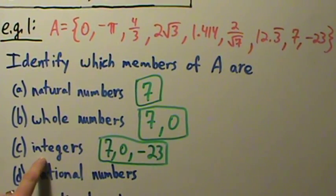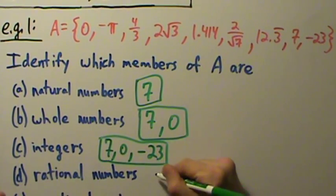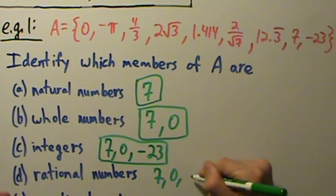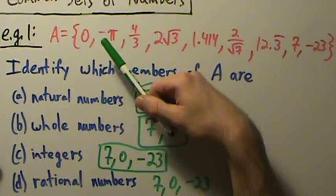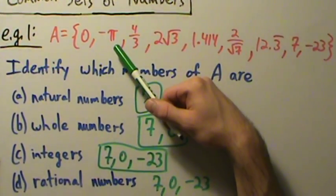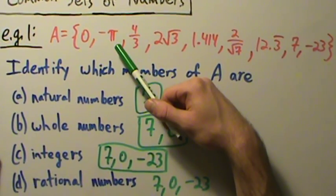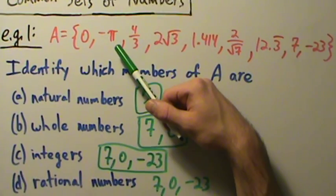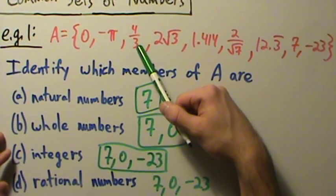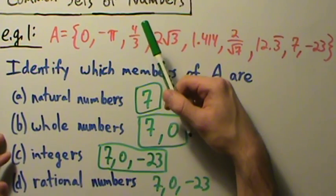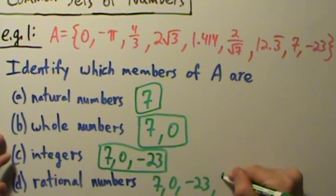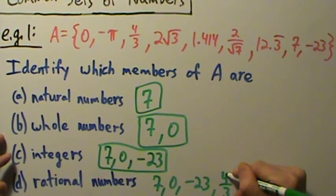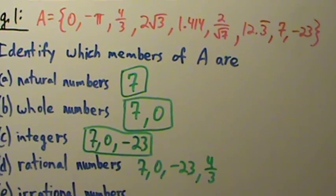How about the rational numbers? Well, every integer is a rational number, so this is going to include seven, zero, and negative twenty-three. Negative pi? No — remember, pi is irrational because it's a decimal that goes on infinitely long and never repeats. How about four-thirds? Yeah, that's a ratio of two integers — four divided by three — so four-thirds also counts.